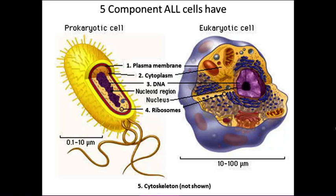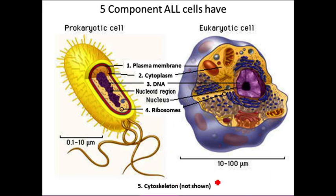I don't expect you to label diagrams in this class — I'm not going to test you over that. Instead, you're expected to learn the structure and function of each of these, specifically the function or the job. So that's what we'll be focusing on for this lecture. It is helpful to have a diagram to make a picture in your mind. We're going to go through these five: plasma membrane, cytoplasm, DNA, ribosomes, and cytoskeleton.